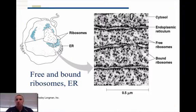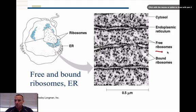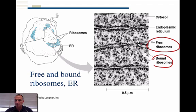The last picture here — I just wanted to show you an actual picture of free ribosomes, which are located here, and bound ribosomes, which are found on this endoplasmic reticulum here. That's just a brief overview of the nucleus and ribosomes. I hope this helps and I will talk to you soon.